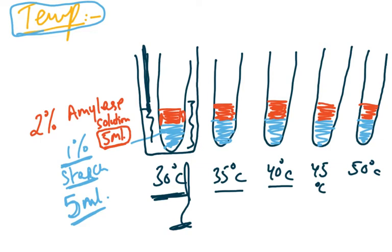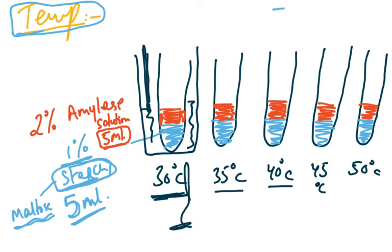To measure the progress of the reaction, we take a white tile and add drops of iodine on it. Iodine is brown in colour. After mixing the amylase and starch in the first test tube, we take a drop every 30 seconds — that is what is humanly possible. We take a drop from the test tube and mix it with the iodine solution on the tile to observe the colour.